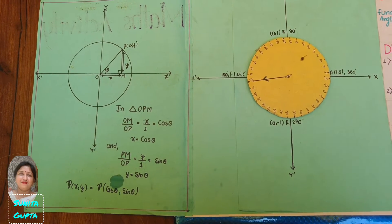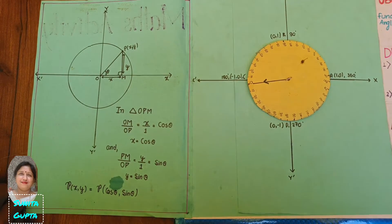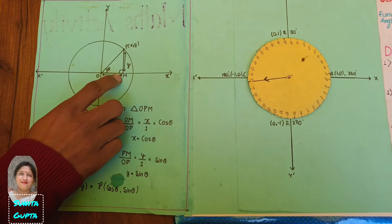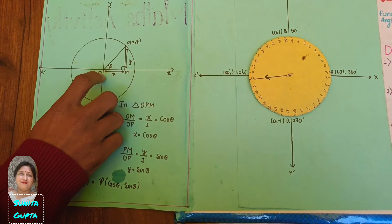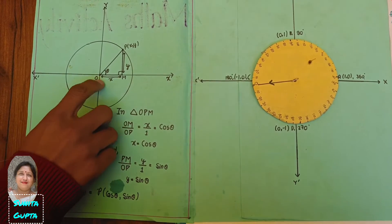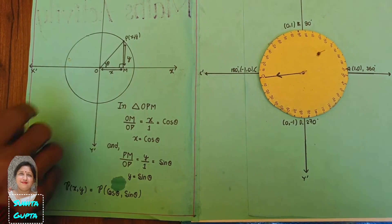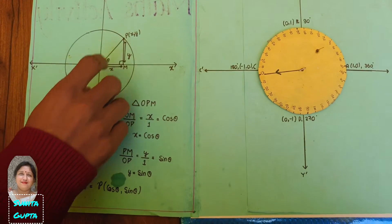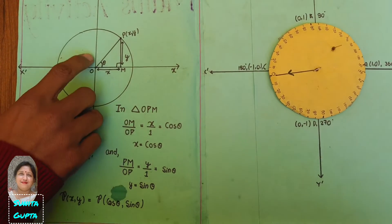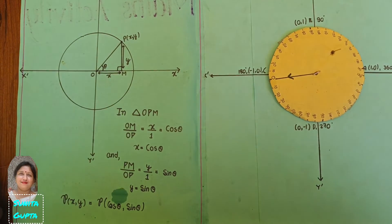Let us take a point P on the unit circle and draw a perpendicular on the X-axis. The length PM is equal to y, which is perpendicular to side OM, and length OM is x. The line joining points O and P makes the hypotenuse of the triangle, which is the radius of the unit circle. Here theta is the angle between the hypotenuse and base OM.